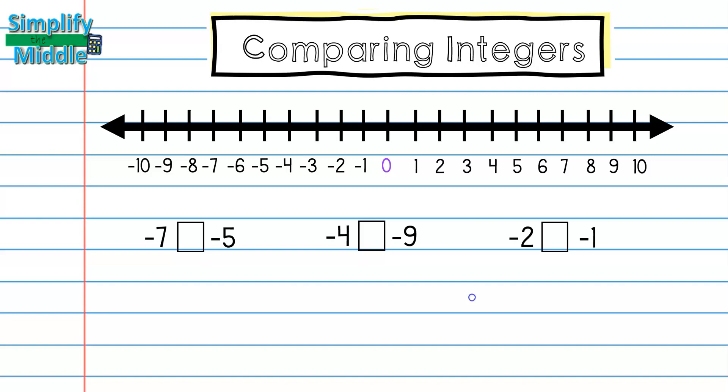In the first problem, we're comparing negative 7 and negative 5. I know that negative 7 is to the left of negative 5. So this is a less than.